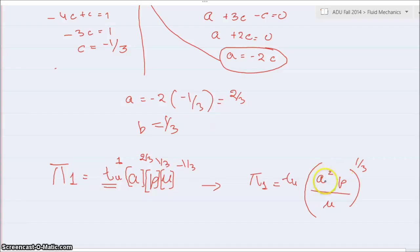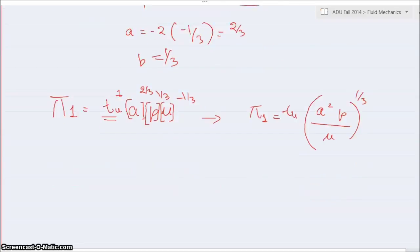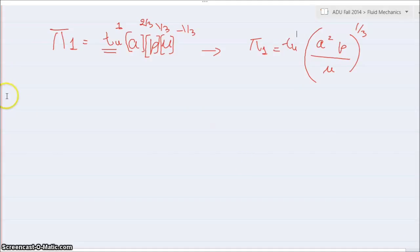Let's write this in a different format. So this is going to be a to the 2 by 3, rho to the 1 by 3, and mu to the minus 1 by 3. That's my first equation.